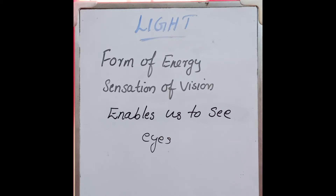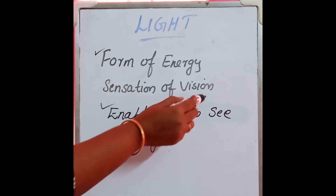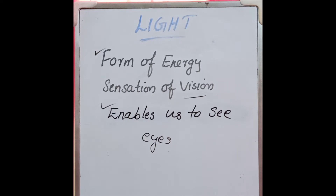We can see the beautiful world only with the help of eyes. But if there is darkness, can you see anything? No. Even though we have eyes, we can't see things if there is no light. So, light enables us to see things. Light is a form of energy; it produces the sensation of vision and enables us to see the things around us.